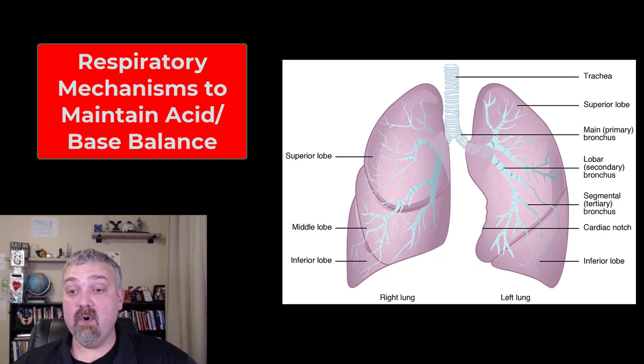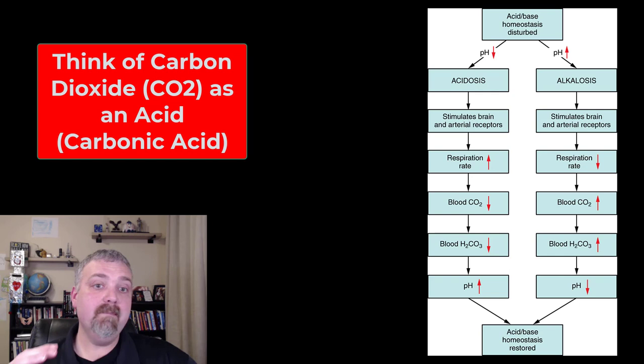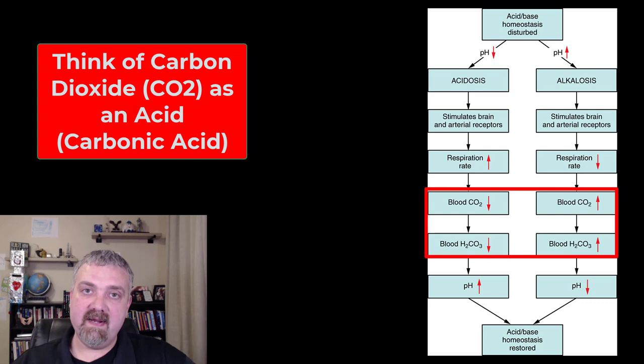The simplest way to look at this—I think we overthink this—the simplest way to look at this is carbon dioxide becomes an acid called carbonic acid. Carbon dioxide can react with water to form carbonic acid, and usually they're in equilibrium. So the more carbon dioxide you have, the more carbonic acid you will have. It's a weak acid, but it's still an acid. So when you think carbon dioxide, think acid.